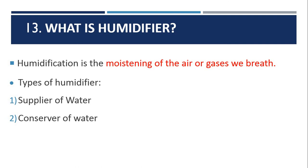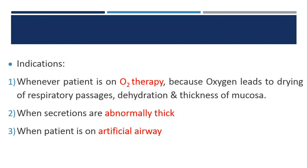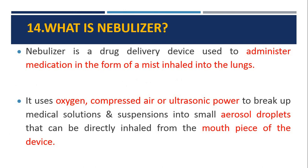The thirteenth question: what is a humidifier? Humidification is the moistening of air or gas that we breathe. There are two types: suppliers of water and conservers of water. When delivering low-flow oxygen, the humidifier chamber must be filled with water to avoid delivering dry oxygen, which can cause secretions to dry out and form crusts that are difficult to remove. Indications include oxygen therapy (as oxygen causes drying of respiratory passages), abnormally thick secretions, and when the patient is on an artificial airway.